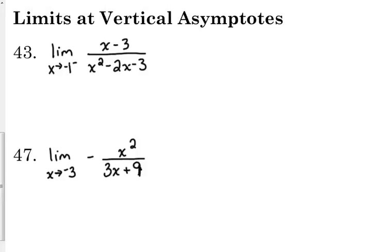We can talk about limits at vertical asymptotes as well. Let's look at number 43. If we're asked, what's the limit as x approaches negative 1 from the left of this rational function, x minus 3 over x squared minus 2x minus 3. Now we could plug in negative 1. That should always be your first reaction with a limit, is to plug it in.